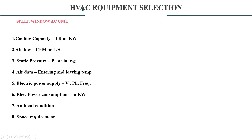How do you select the split or window AC unit? First, you have to measure the cooling capacity, which can be measured in tonnage of refrigeration or kW. Air flow can be measured in CFM or litres per second. Static pressure in Pascal or inch water gauge. Air data covers entering and leaving temperature of air. Electric power supply — it could be in volts, phase and frequency. We have 230V and 415V; mostly we use 230V, but this depends on your country. Phase — whether it's single phase or three phase. Frequency — what is the frequency of the machine.